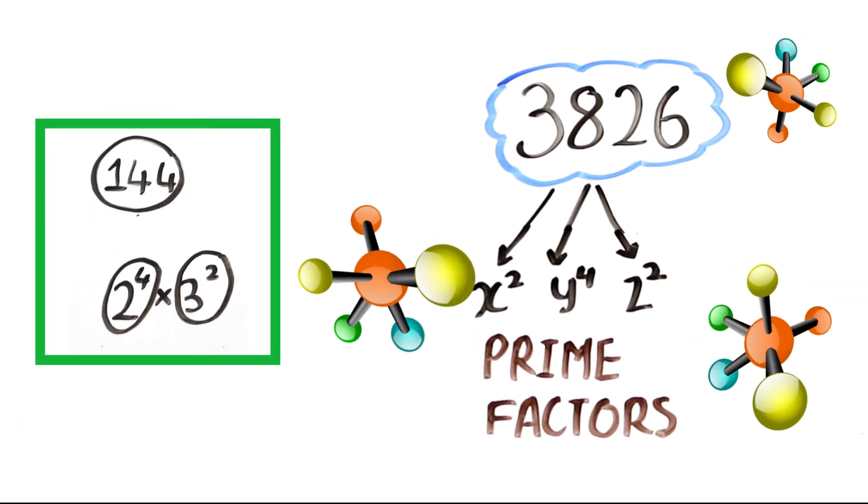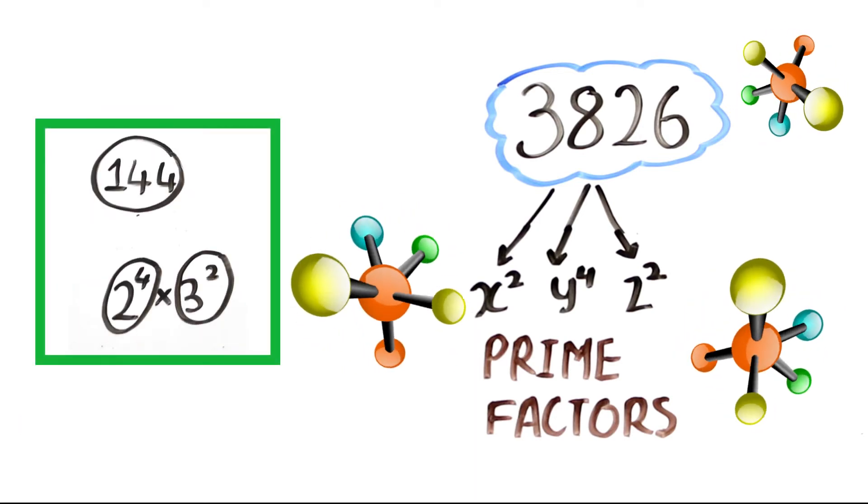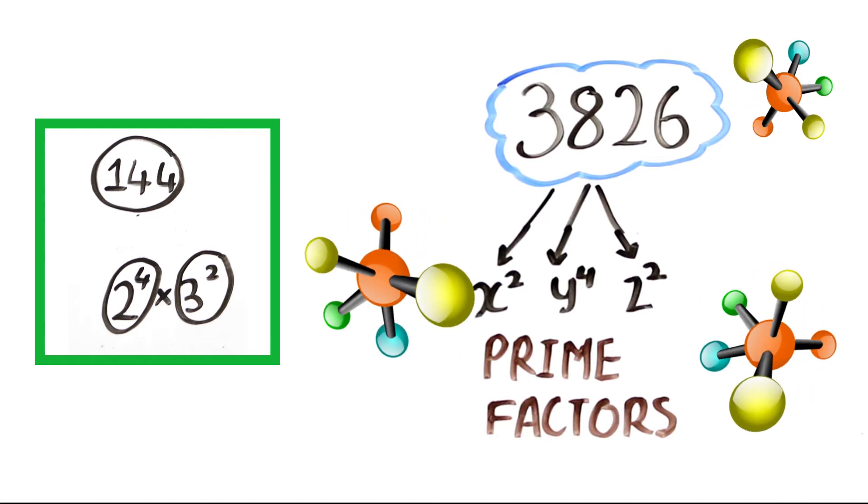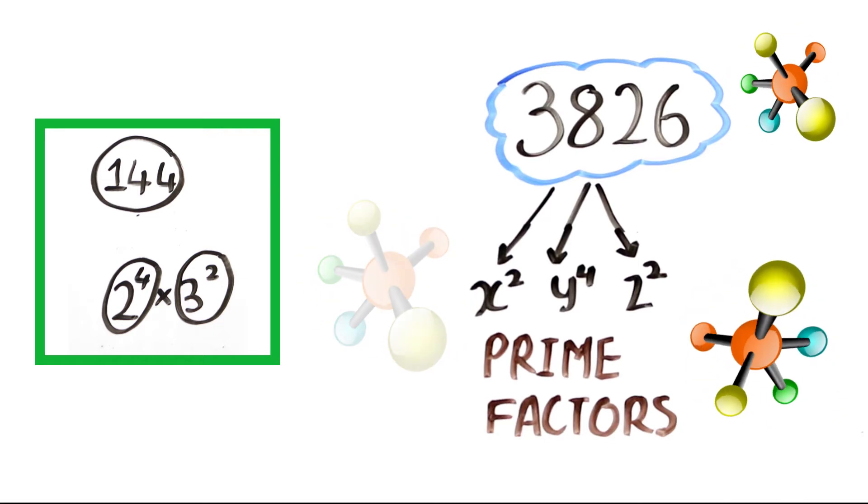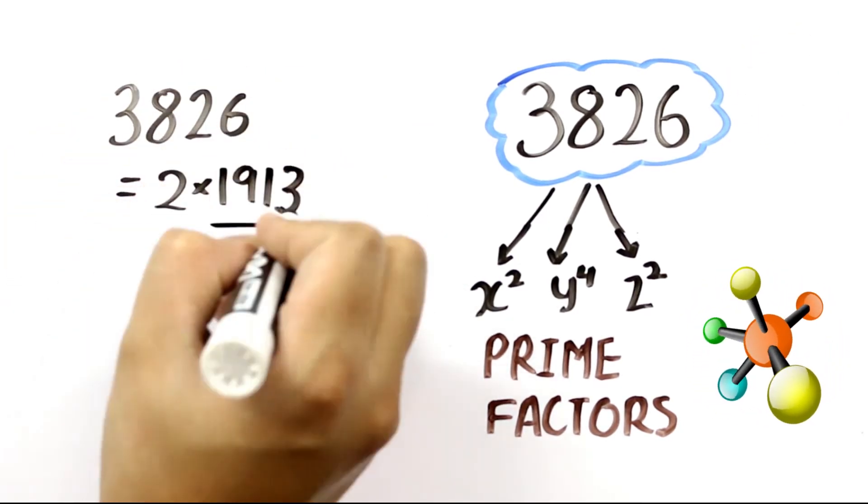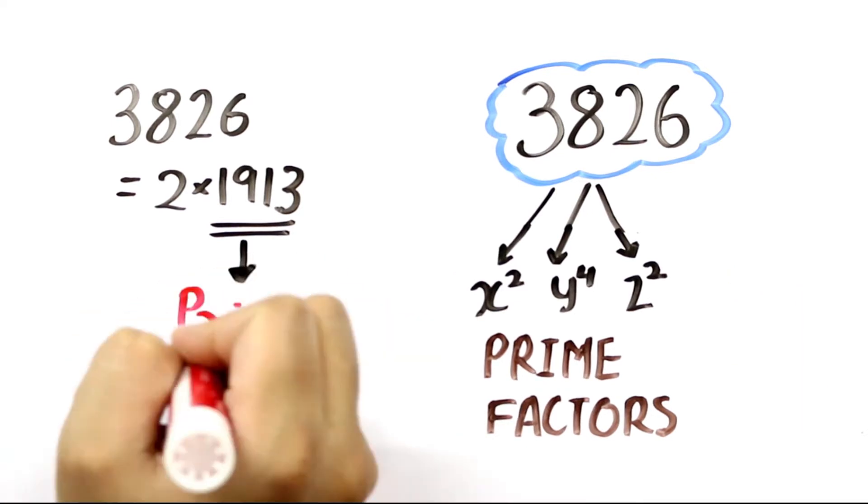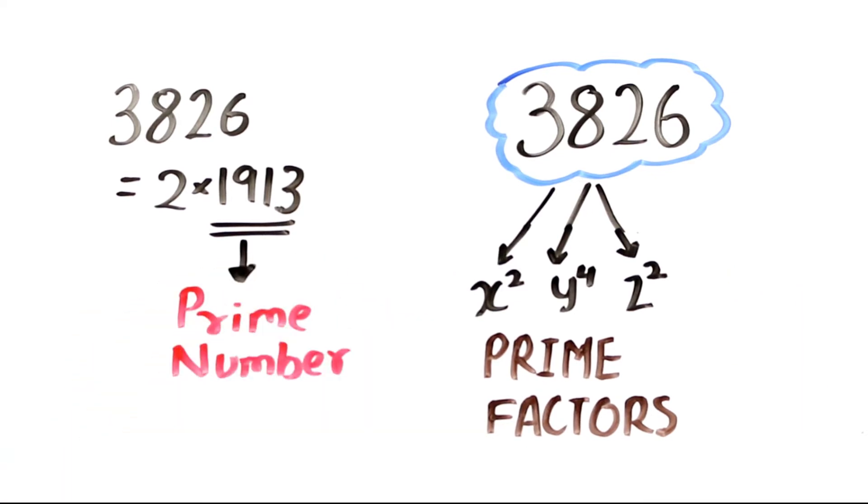For example, 144 can be written in the prime factor form as 2 raised to 4 into 3 square. So we can write 3826 equals 2 into 1913. Now 1913 is a prime number, that is, it cannot be factorized further.